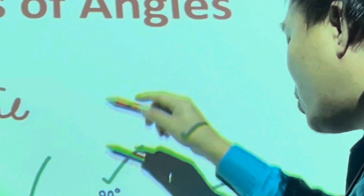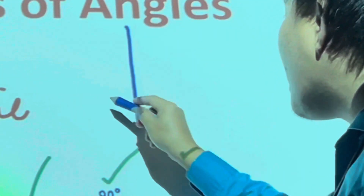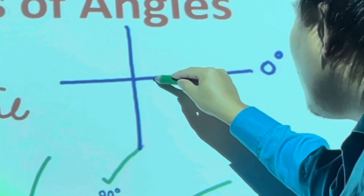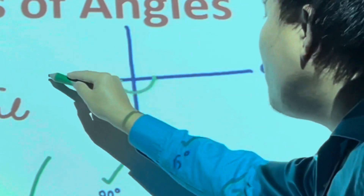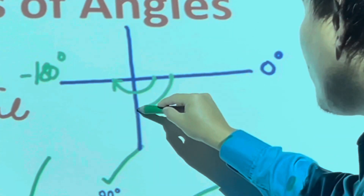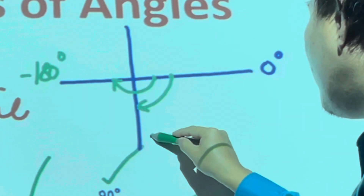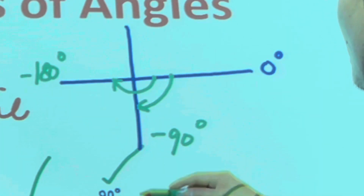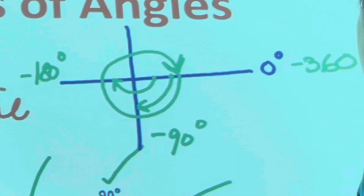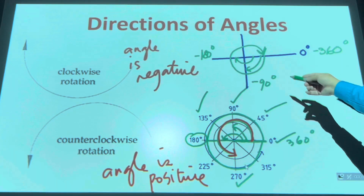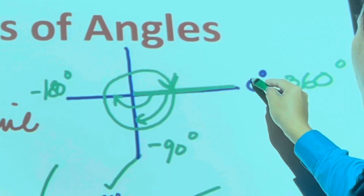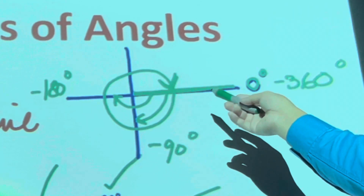For example, drawing an angle in standard position in a clockwise direction: zero degrees starts from the positive x-axis. From the positive side of the x-axis going clockwise, half of the circle will be negative 180 degrees. Continuing, that gives negative 90 degrees. There's no negative zero, so we just have zero degrees.